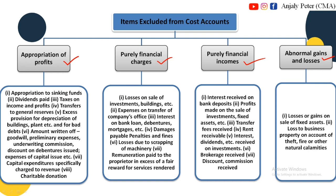Appropriation of Profit means we need to calculate the net profit which needs to be appropriated — we don't include these in cost accounts. For example: Appropriation to Sinking Funds, Dividends, Tax on Income and Profits, Transfer to General Reserves, Excess Provision for Depreciation, Amount Written off Goodwill, Preliminary Expenses, Underwriting Commission, Discount on Debentures Issued, Expenses of Capital Issues, Capital Expenditure specially charged to revenue, Charitable Donation.